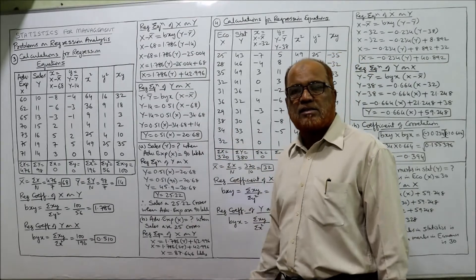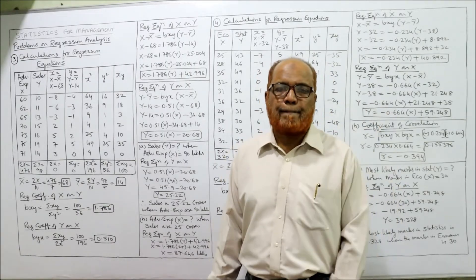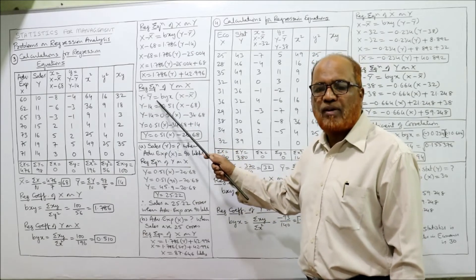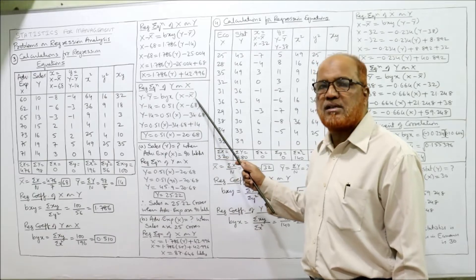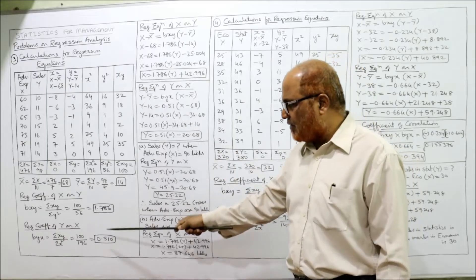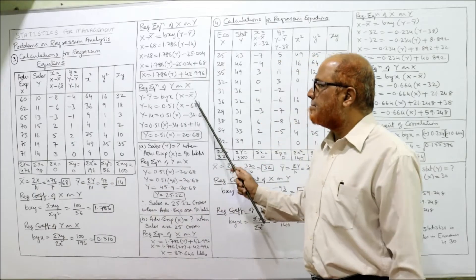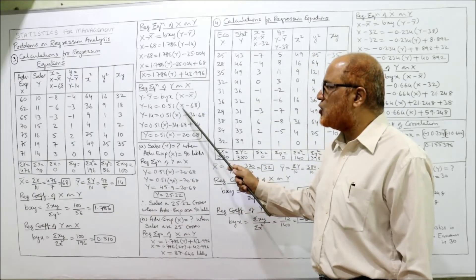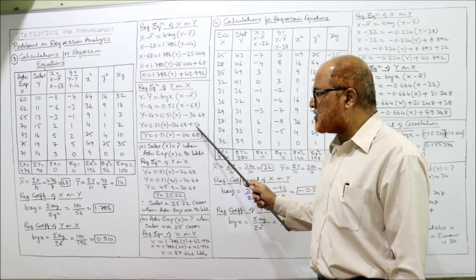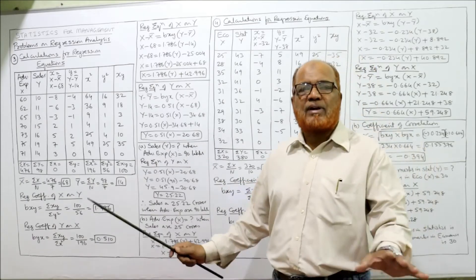Similarly, regression equation of Y on X: Y minus Y bar equals BYX times (X minus X bar). With Y bar equal to 14 and BYX equal to 0.51: Y minus 14 equals 0.51 times (X minus 68). Opening the bracket: 0.51X minus 0.51 times 68, which is 34.68. Bringing 14 to the RHS: Y equals 0.51X minus 34.68 plus 14, giving Y equals 0.51X minus 20.68.